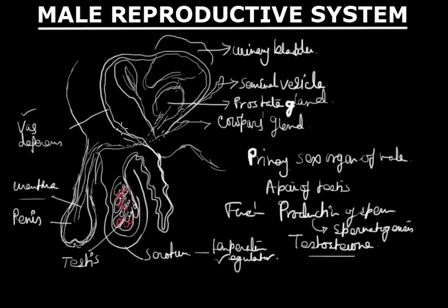The next part of the reproductive system is the seminal vesicle. The seminal vesicle is the storage site for sperm. Secretions from the seminal vesicle and the prostate gland add up to form semen. From there, sperm passes through the urethra.